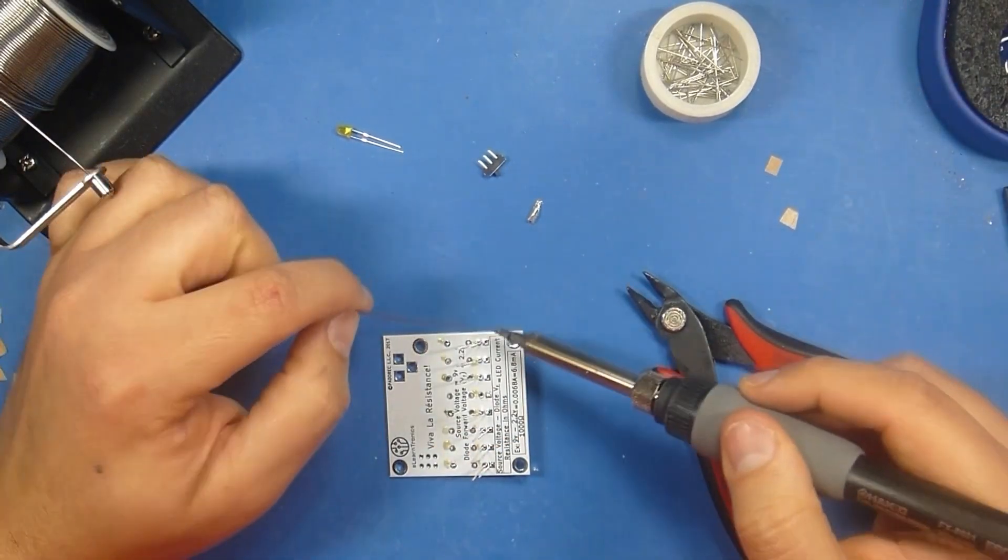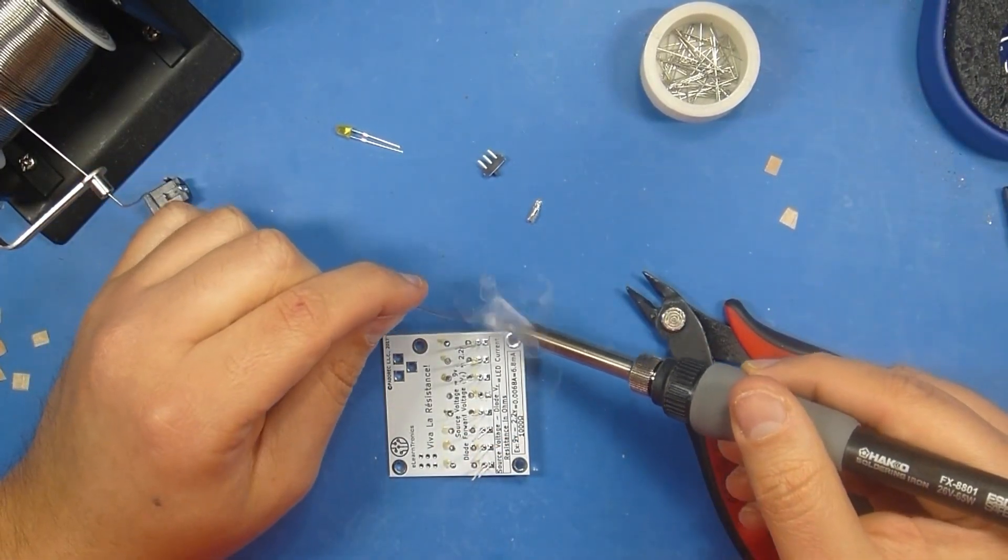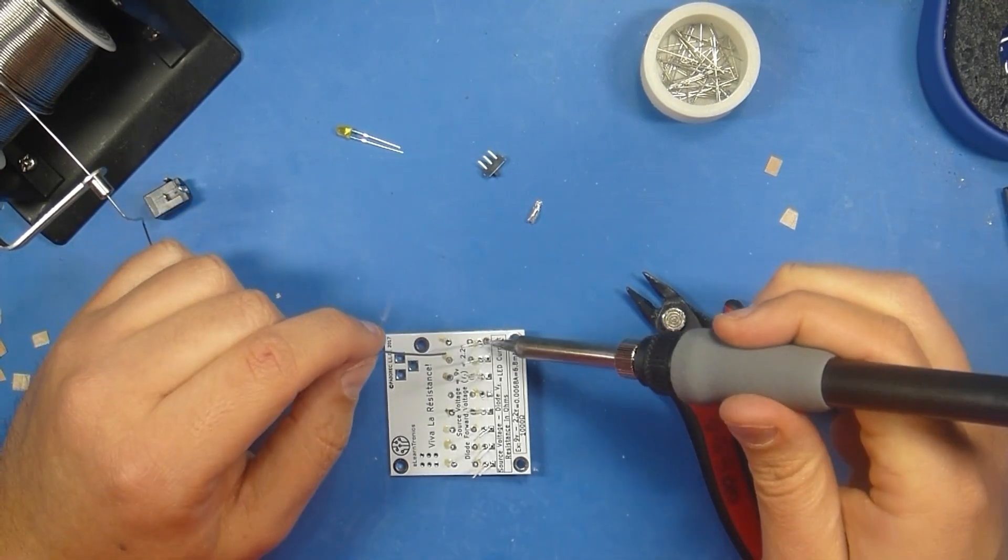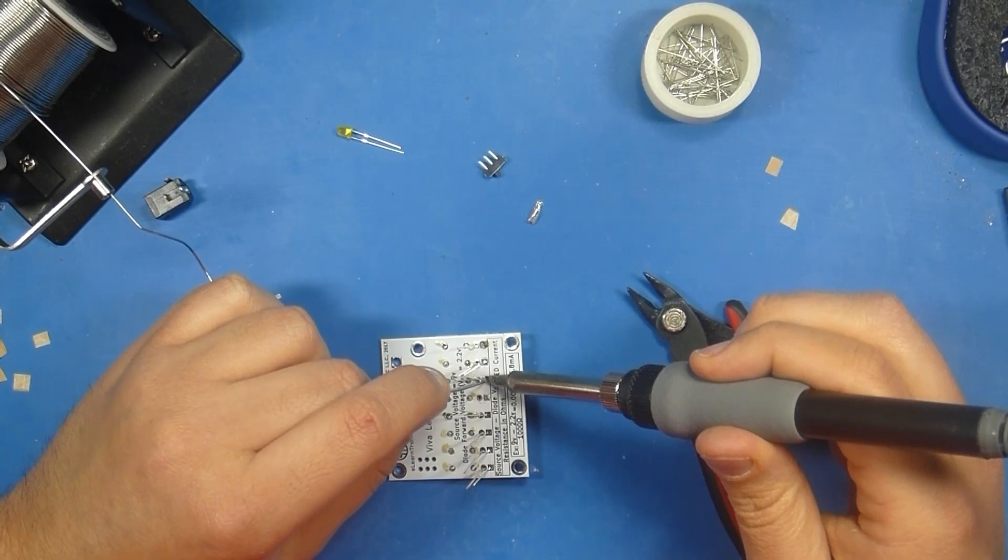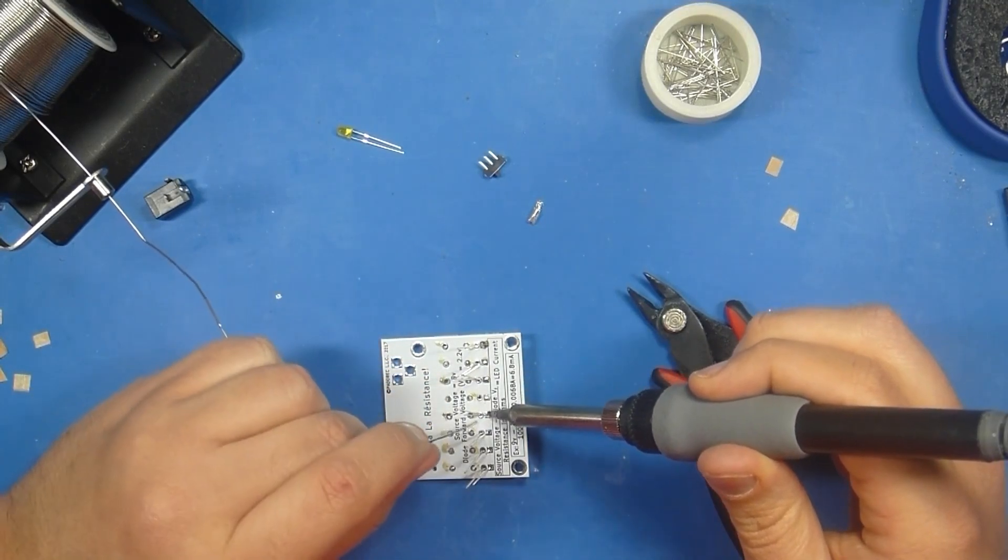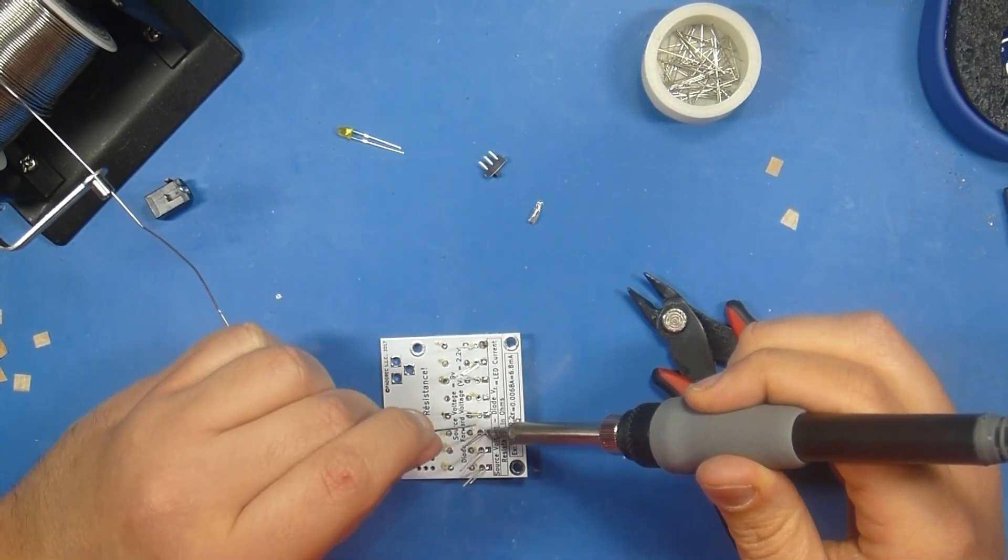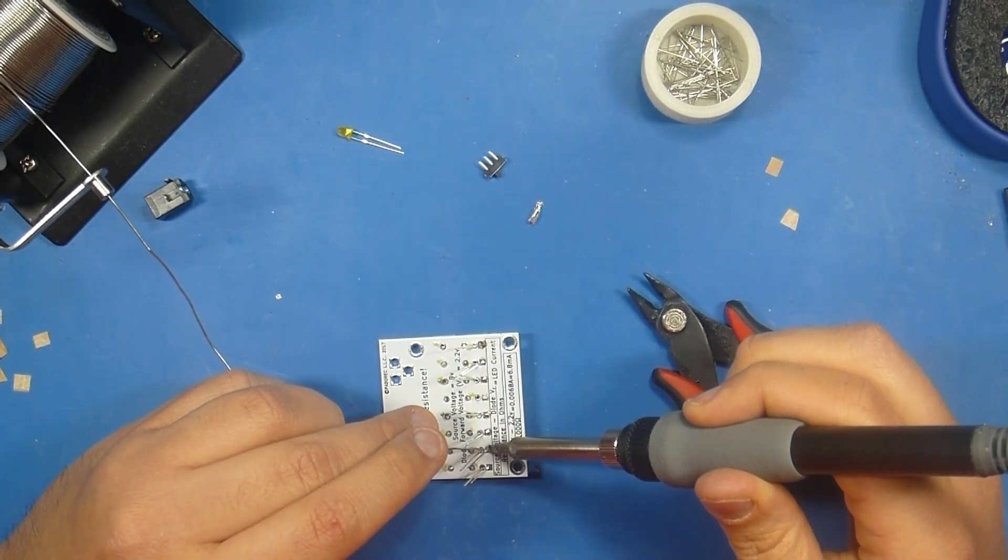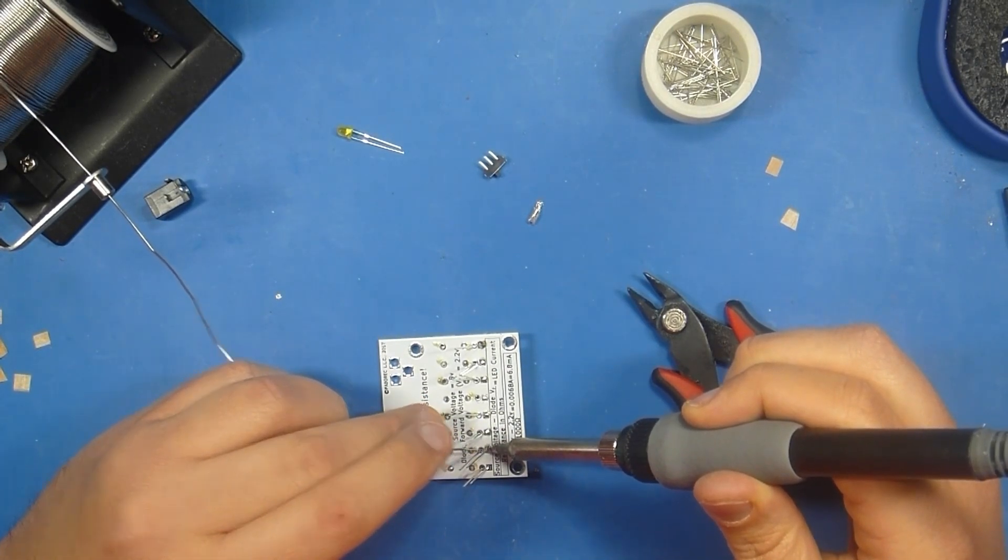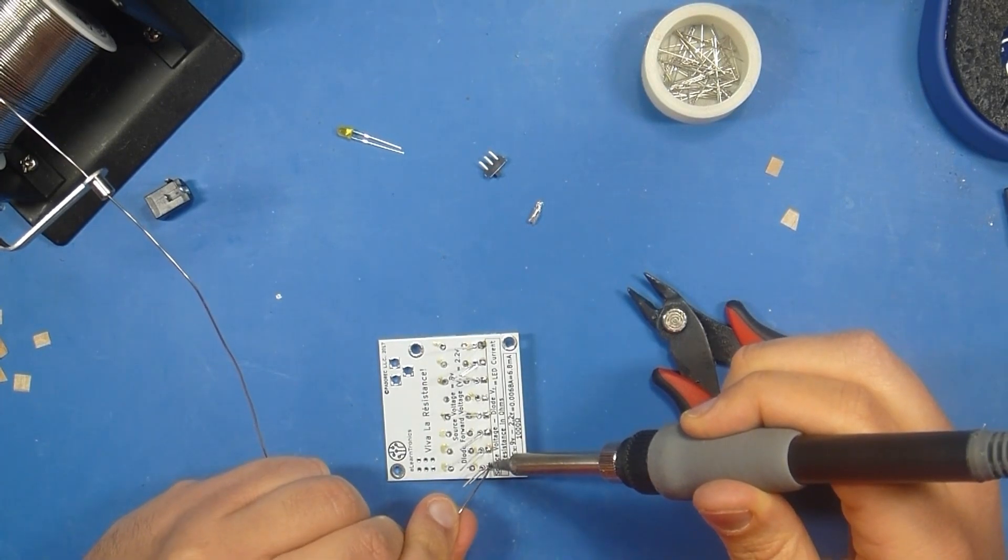And just like with the resistors, I will come through and solder, again, one point only for each of the LEDs. This can go pretty quickly. But if you need the time, take your time. You do not need to rush. Soldering irons are very hot. They can be dangerous. Take your time and only go as quickly as you are comfortable.